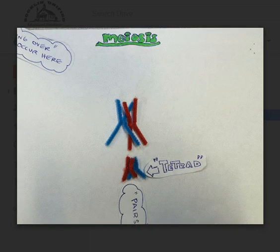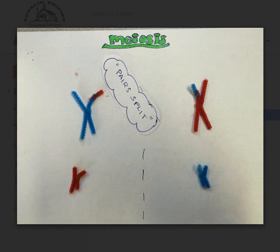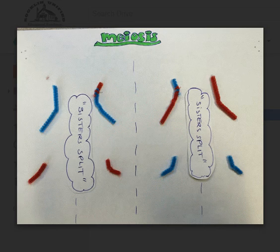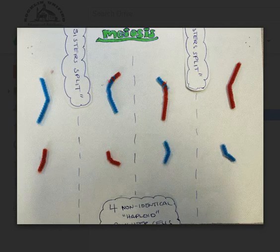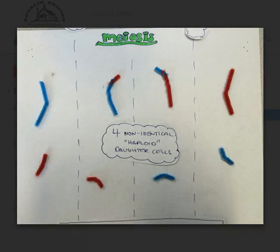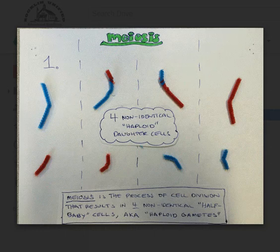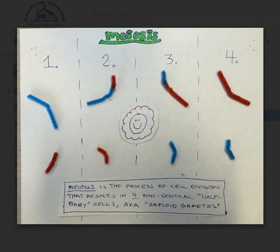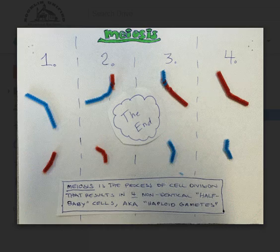We have pair split and then we have sister split. So copying, pairing up, crossing over, pair split, and then sister split, ending up with four non-identical haploid cells.